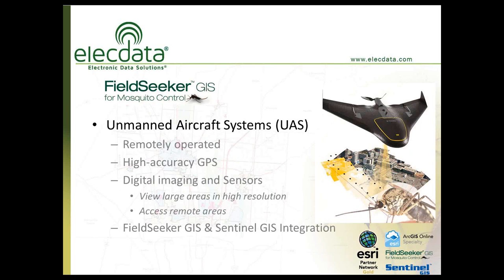UAS is a term that stands for unmanned aircraft systems. This is a remotely operated aircraft, whether it be fixed-wing or multi-rotor type. These are remotely operated autonomous systems that carry a payload of sensors, most typically digital imaging sensors. The advantage is the ability to view large areas in high resolution, and another tremendous advantage for mosquito control is the ability to access remote areas far from motorized vehicle access.